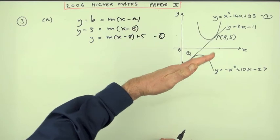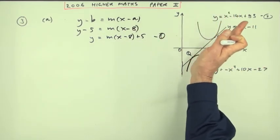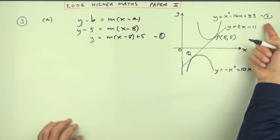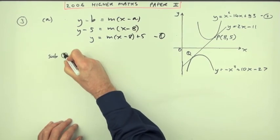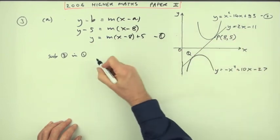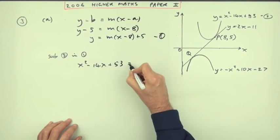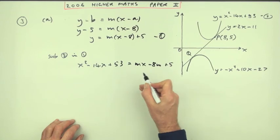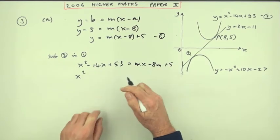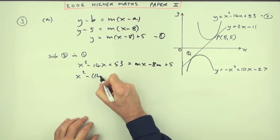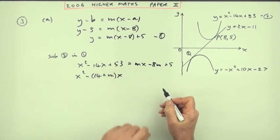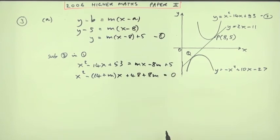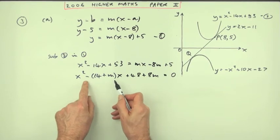Substitute equation two into equation one to preserve x squared: x squared minus 14x plus 53 equals mx minus 8m plus 5. Rearranging to a quadratic equal to zero: x squared minus 14 plus m times x, plus 48 plus 8m equals zero. So the three coefficients are 1, negative 14 plus m, and 48 plus 8m.